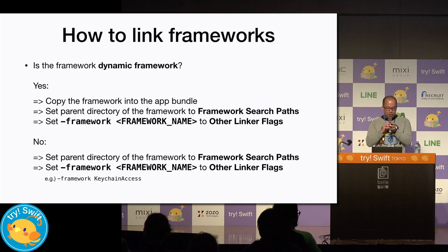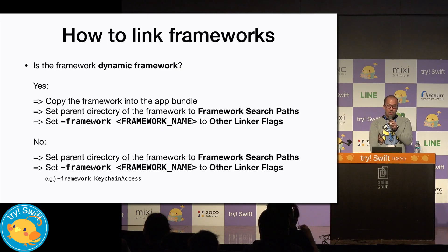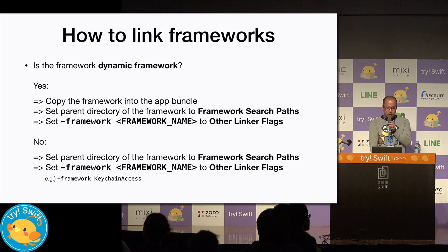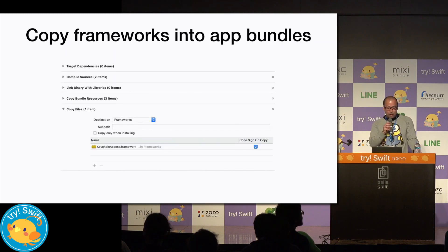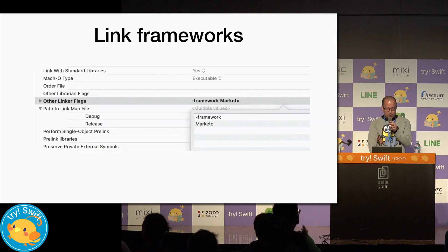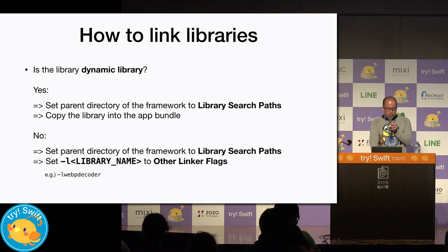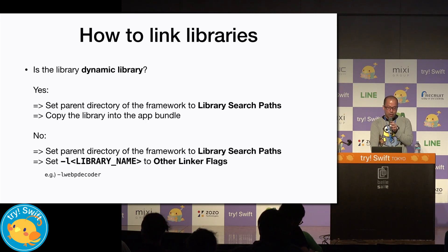Up next, the anatomy of linking. In the process of linking frameworks or libraries, the important thing is the difference between dynamic and static. For a static framework, just set the search path and linker flags. The static framework is linked at build time, so these settings are needed for the static linker to discover the framework. If the framework is a dynamic framework, it should be copied to the app bundle, because a dynamic framework is linked at run time and the dynamic linker must be able to find it. To copy the framework into the app bundle, add a copy files phase in the build phases, then set the framework to the linker flags. For libraries, it is almost the same — the difference is that it uses the library search path instead of the framework search path, and the -l option instead of the -framework linker flag.